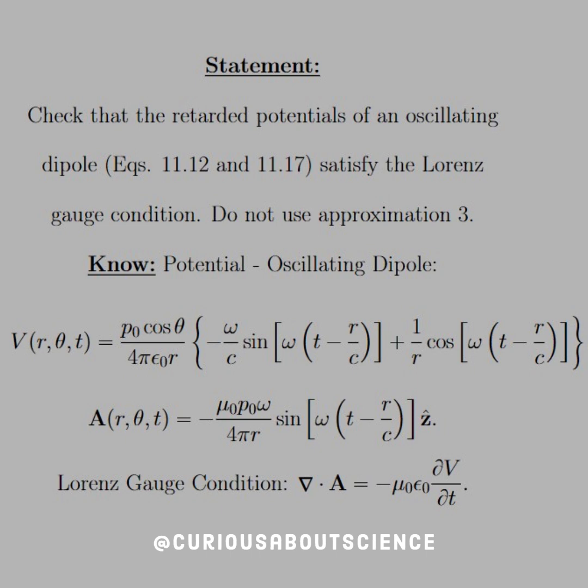The statement reads, Check that the retarded potentials of an oscillating dipole satisfy the Lorenz gauge condition. Do not use approximation 3. Okay, if you go check the notes, we talk about all the approximations. So here, what we need to know is the potential of an oscillating electric dipole in this particular case, as denoted with a little p sub-naught,